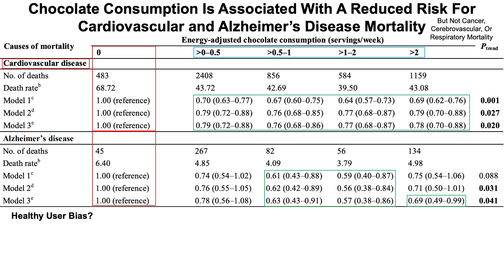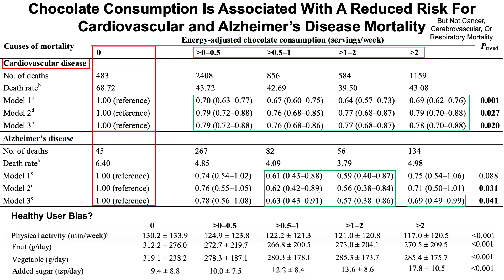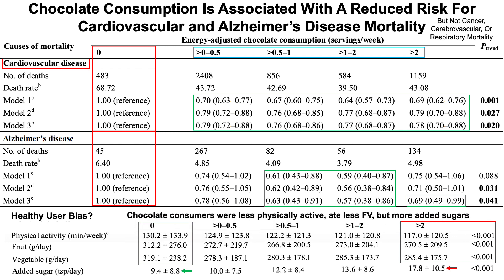Is this just related to healthy user bias — do people who eat more chocolate have a healthier overall lifestyle potentially explaining these effects? The authors examined physical activity in minutes per week, fruit and vegetable intake, and added sugar. People who consumed no chocolate actually had higher levels of physical activity and fruit and vegetable intake compared with higher chocolate consumers. Similarly, no-chocolate consumers had lower added sugar intake, while those consuming more than two servings per week had almost double the added sugar intake. So healthy user bias does not appear to be driving these results — chocolate consumers were less physically active, ate less fruit and vegetables, but more added sugars.